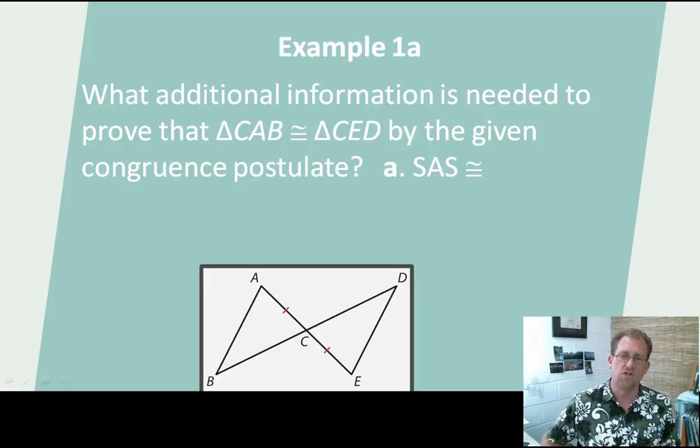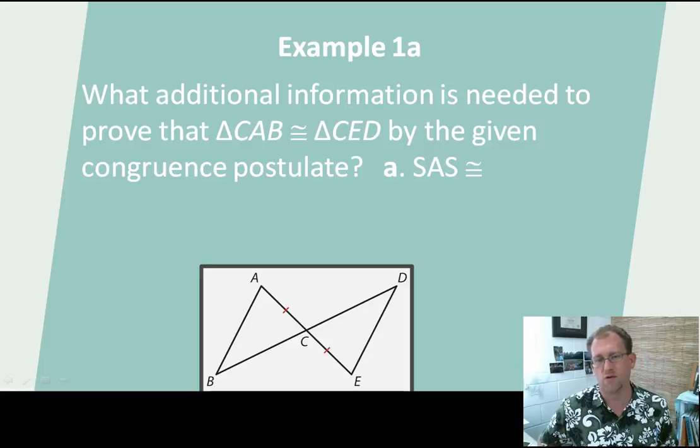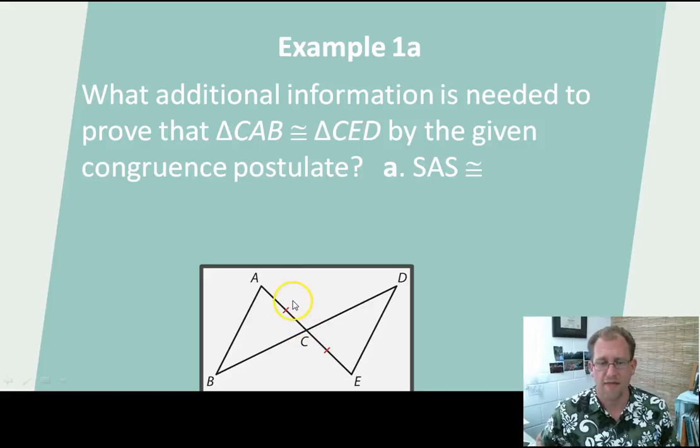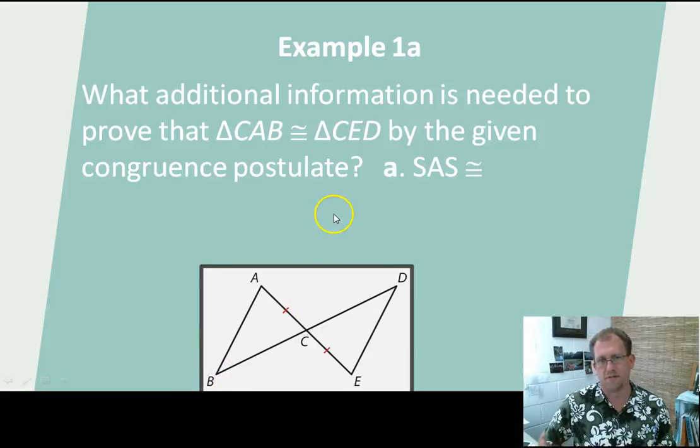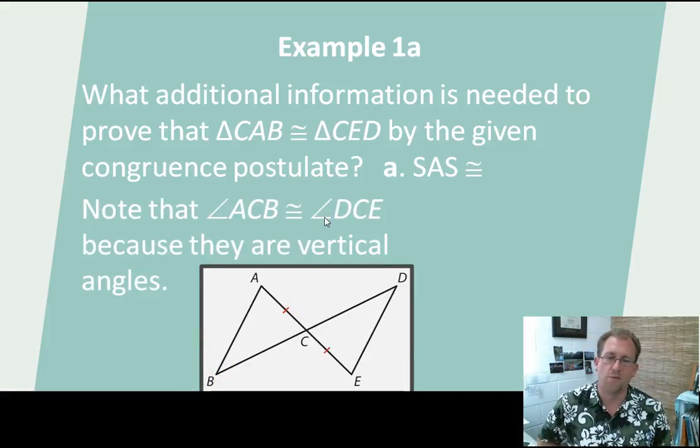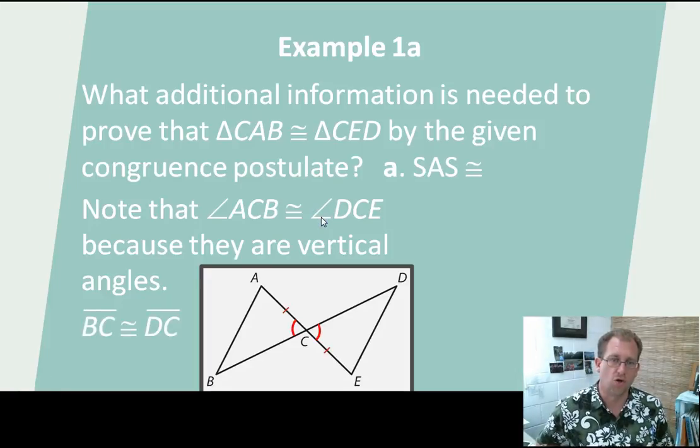So what additional information is needed to prove that triangle CAB is congruent to CED by the given congruence postulate, by side-angle-side? I know that these two sides are congruent. They're marked as congruent. I can tell you that this angle is congruent to that angle because they are vertical angles. So if I'm going to use side-angle-side, I have side-angle. I need side. I would need to know that DC and CB are congruent. If I could find that out, then I would be able to prove that the two triangles are congruent.